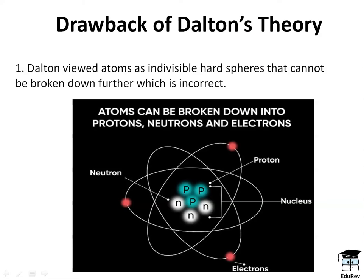Now, what were the drawbacks of Dalton's theory? Dalton proposed that atoms were indivisible hard spheres that cannot be broken down. But this wasn't the case, as later we saw that atoms can be broken down into protons, neutrons, and electrons. Electrons revolve around the atom, whereas neutrons and protons lie inside the atom, in the nucleus of the atom.